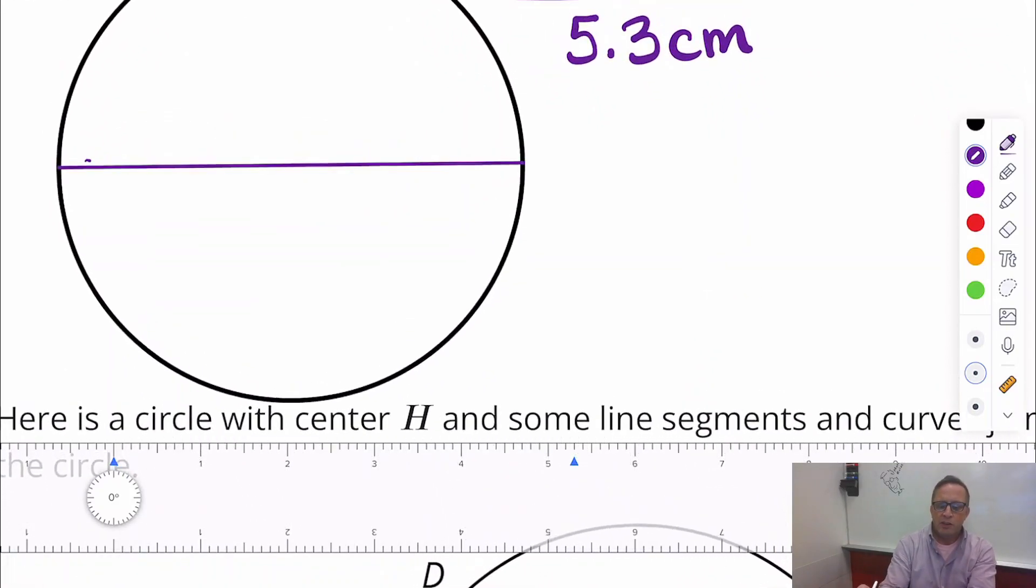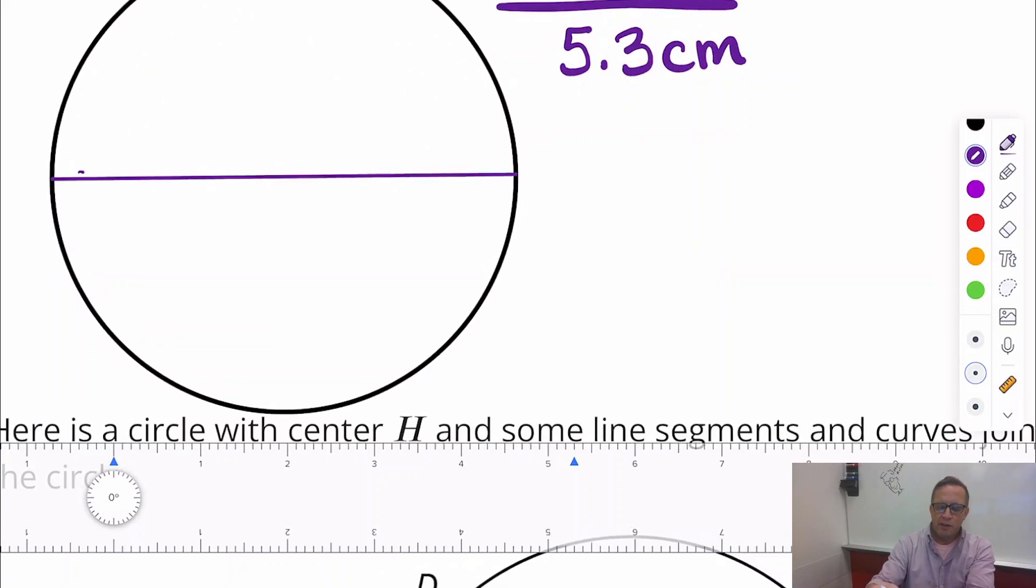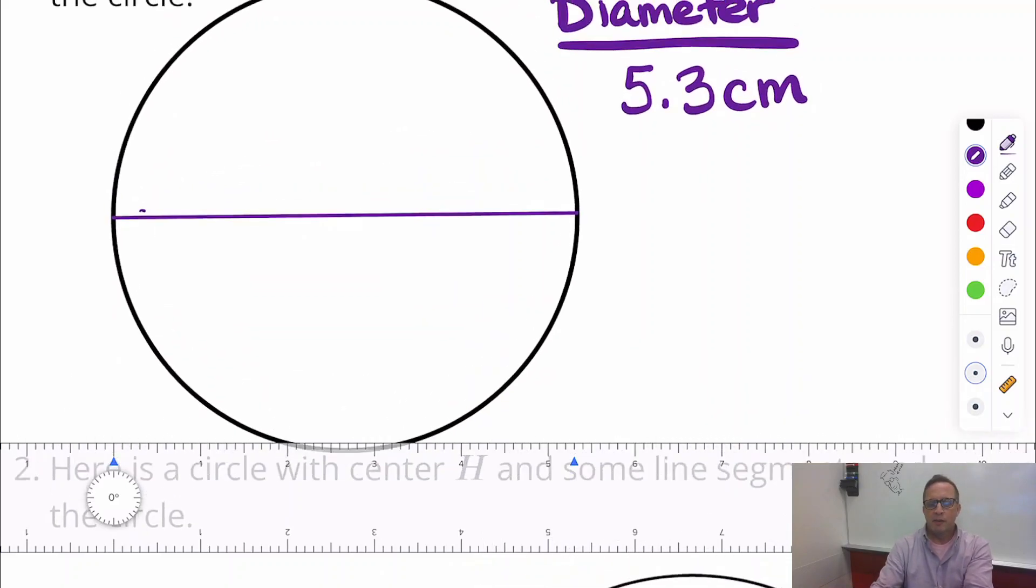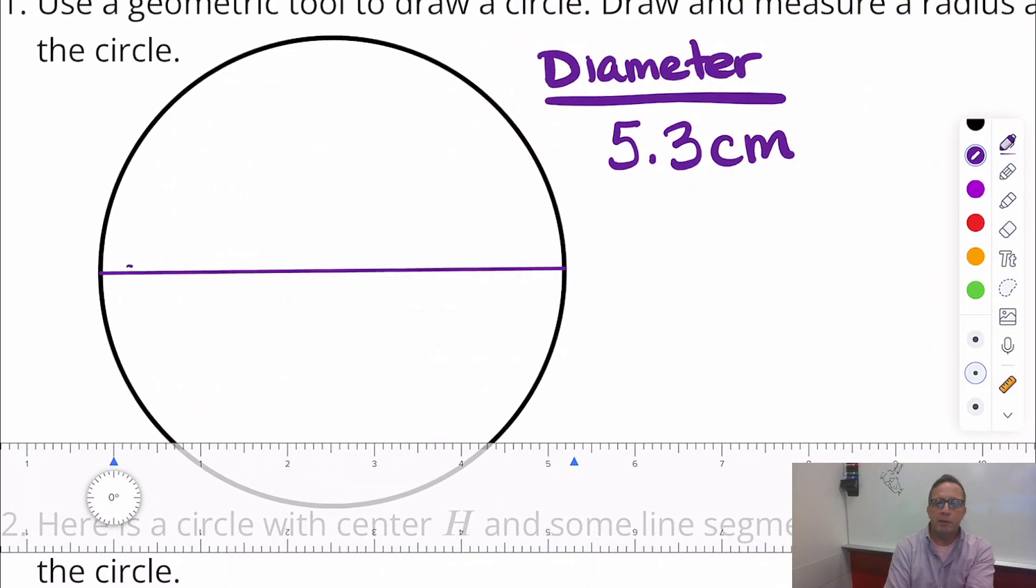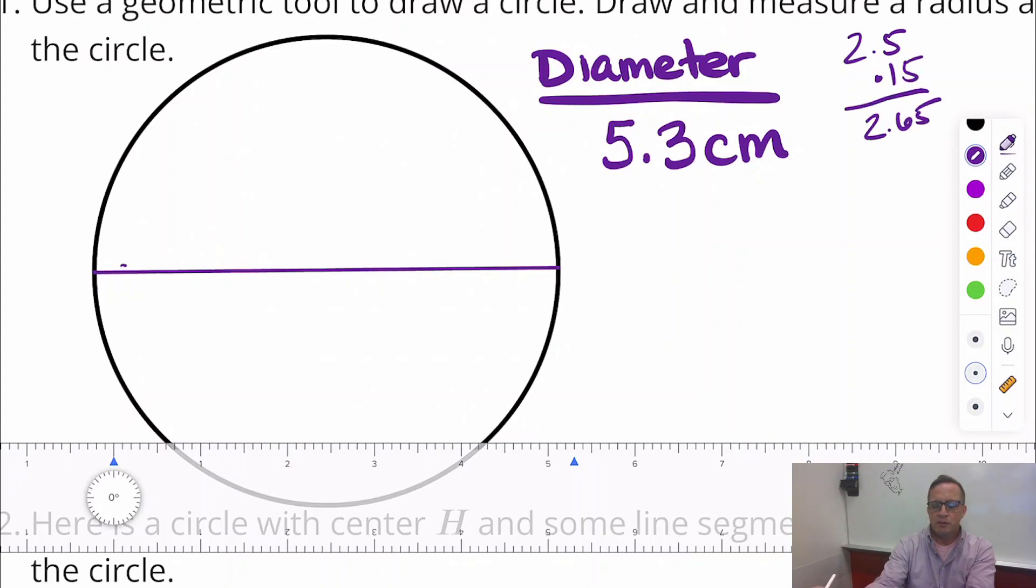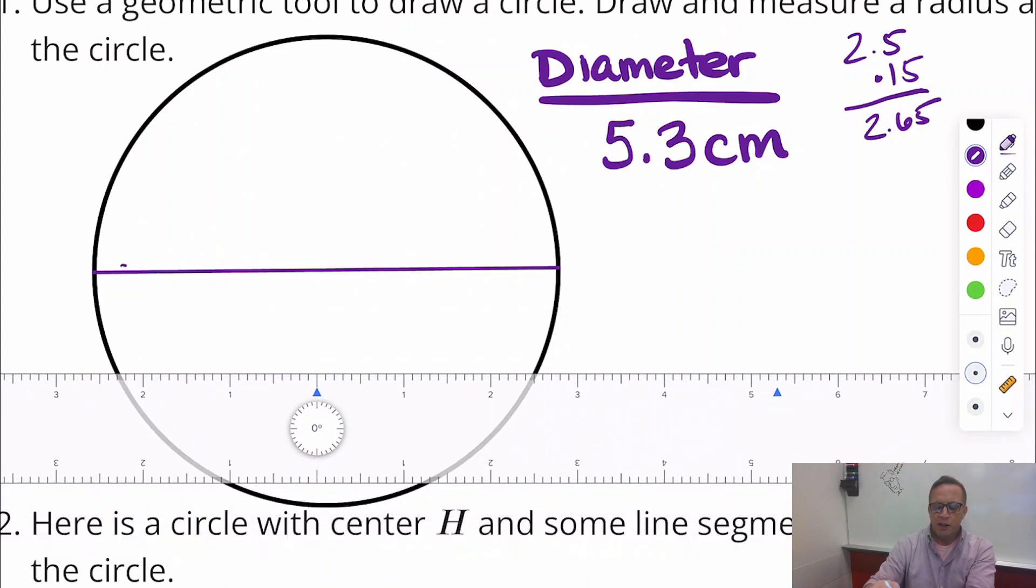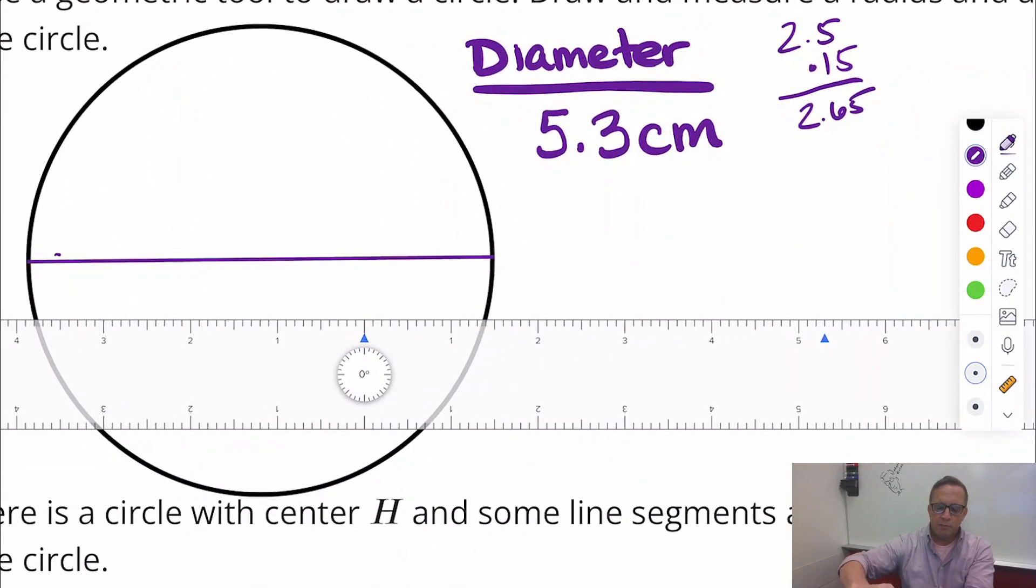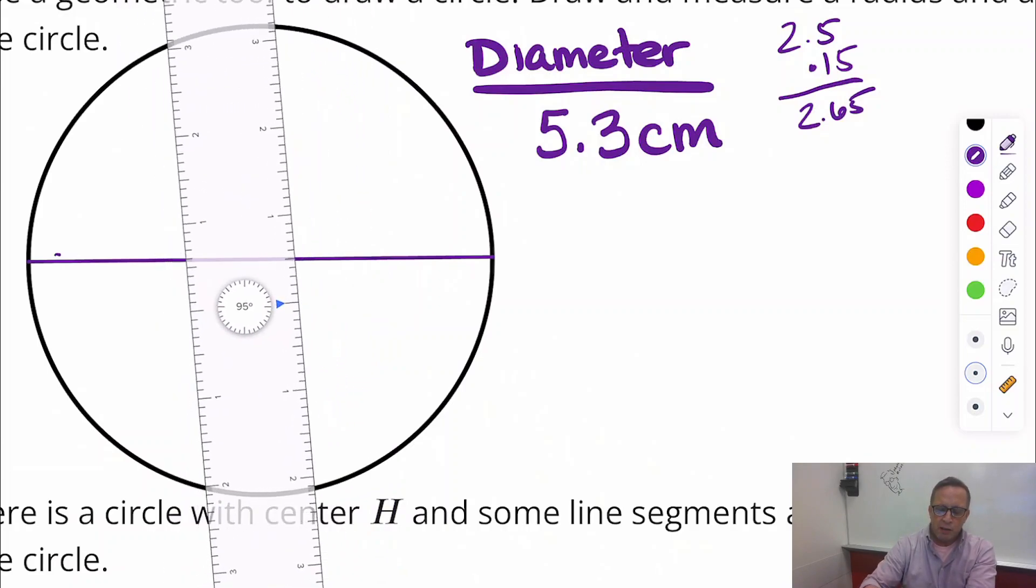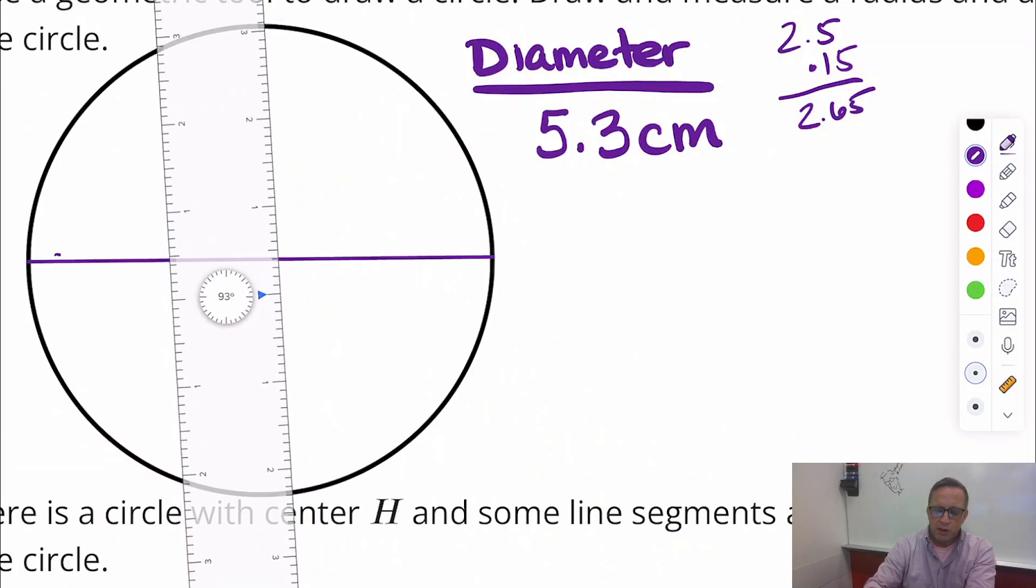And then the radius, the radius is going to be half. Half of 5.3, half of 5 is 2.5, and half of 0.3 is 0.15. So I should get 2.5 plus 0.15, which is going to be 2.65. That's what it should be, right? And so I haven't even laid the ruler down yet, but I should get something that's kind of close to that. It's probably not going to be perfect because I don't think I'm going right through the middle.